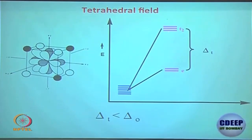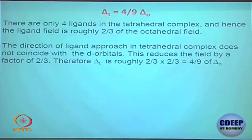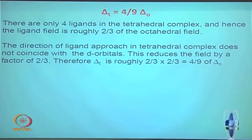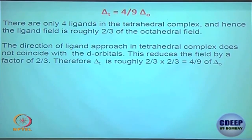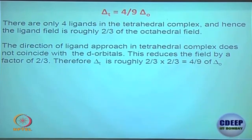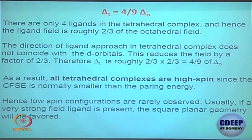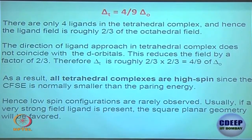The other three orbitals — d_xy, d_yz, d_xz — are closer to but not directly overlapping with the ligands, so they are destabilized in the tetrahedral field. The tetrahedral splitting Δ_t equals 4/9 of Δ₀: two-thirds coming from having 4 ligands instead of 6, and another two-thirds from the indirect approach geometry. Since Δ_t is always smaller, you almost never see low spin complexes in tetrahedral geometry.